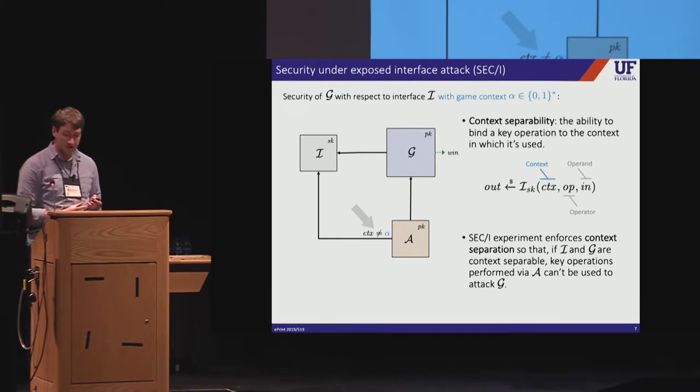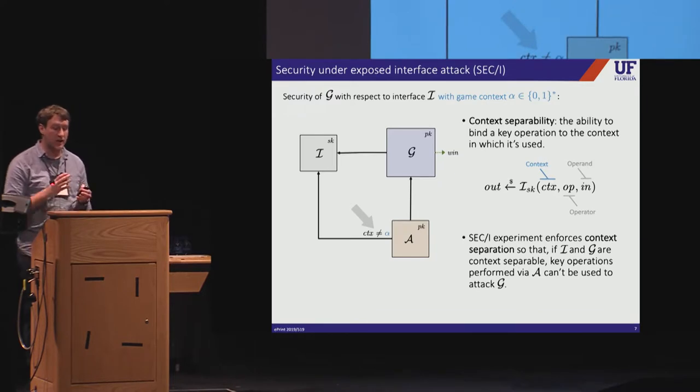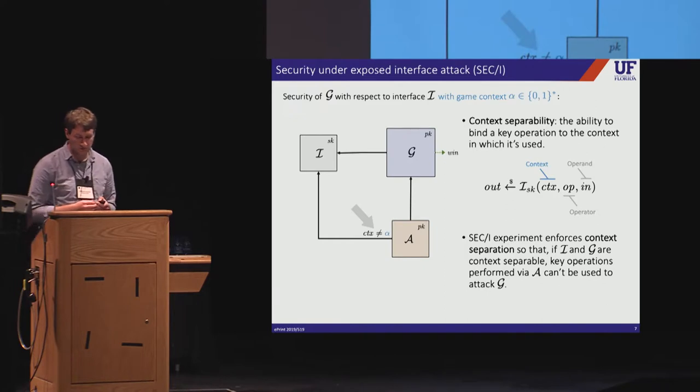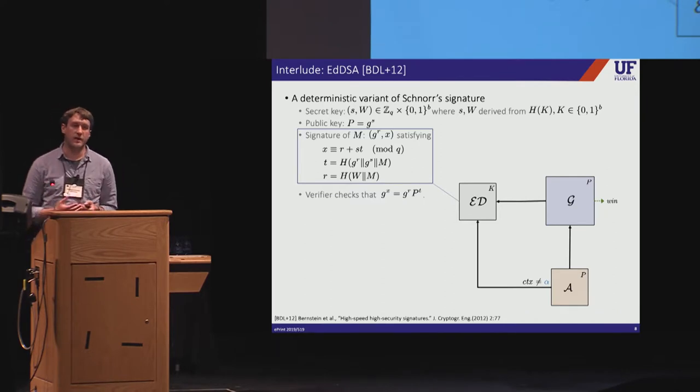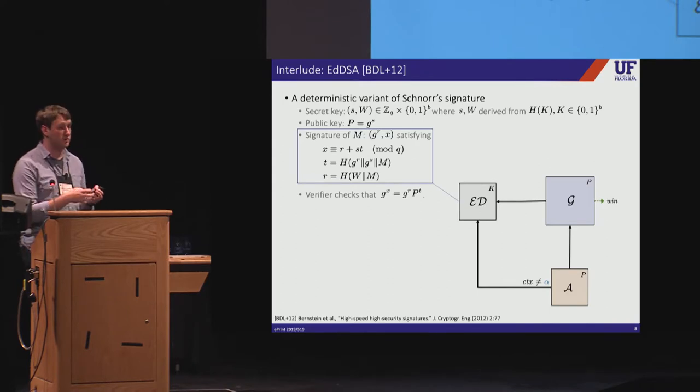So here's the main point. For context separable interfaces, we can design applications so that as long as context separation is enforced, the adversary can't use the interface to attack the application. So I should remark that we didn't invent this idea. Context separability is actually a design pattern that's apparent in a number of cryptographic standards. Let me just give one example to illustrate. So one of the systems that we looked at in our paper is the EDDSA signature algorithm. EDDSA is a variant of Schnorr that offers several advantages, one being that it's deterministic. And I won't belabor the details of the scheme, but the point I want to make is that like most digital signatures, EDDSA isn't context separable on its own.